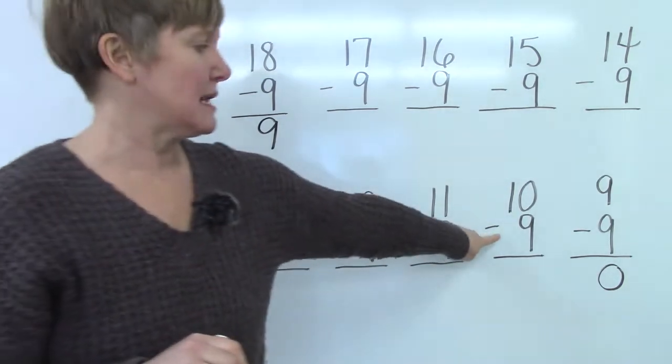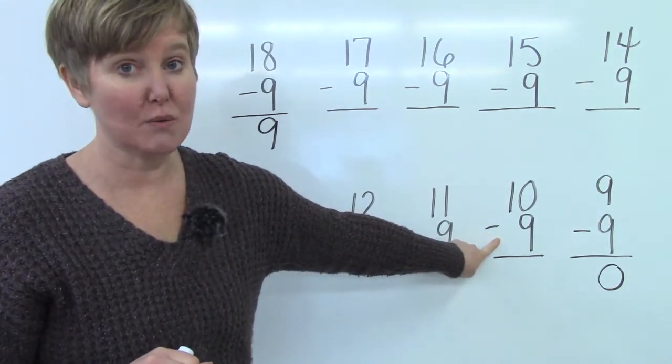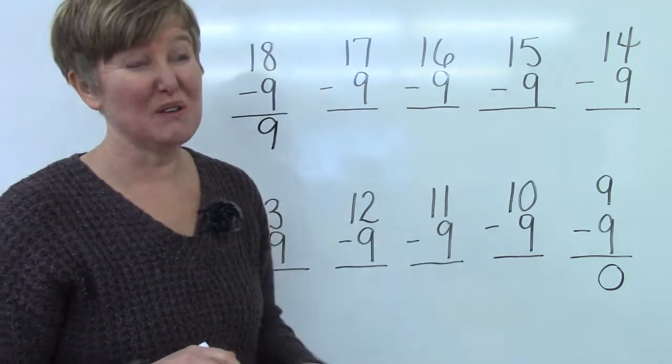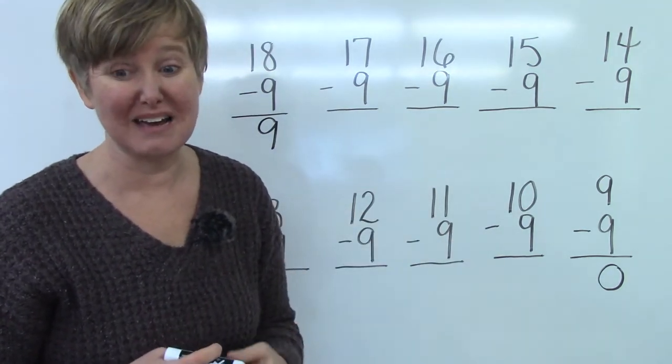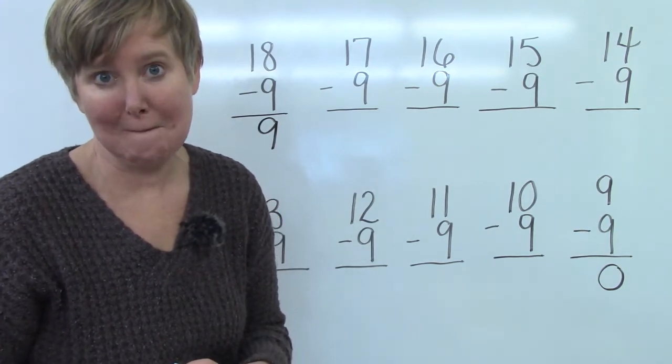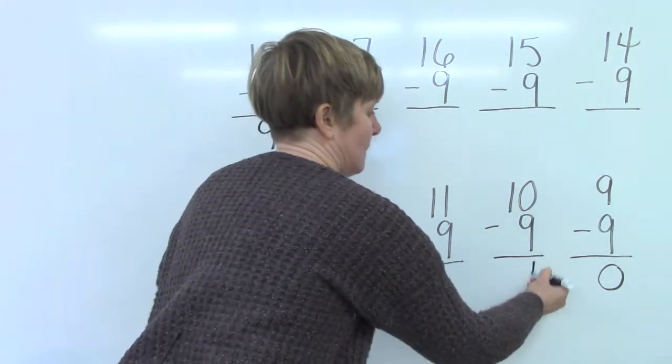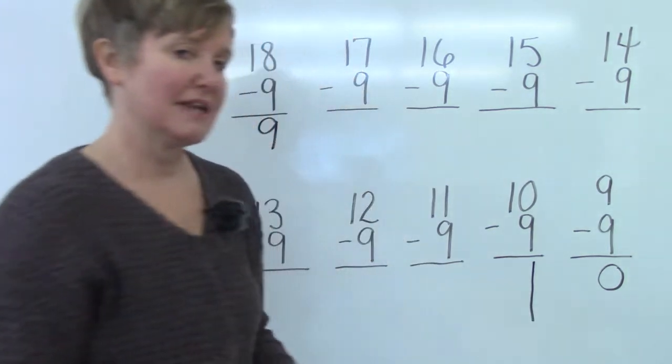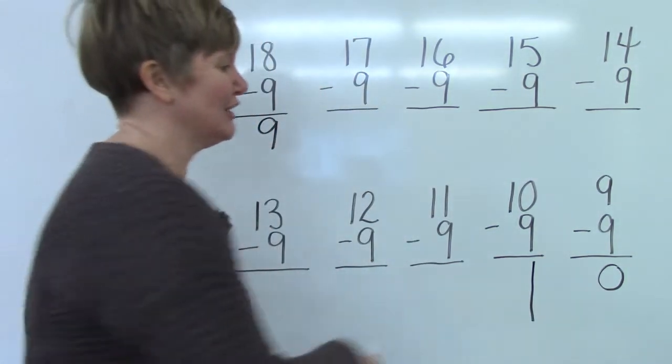Well this one I think is pretty easy. It is ten take away nine. So if you have ten and you take away nine that's almost taking away all of them. How many would you have left? You're right. It's one.